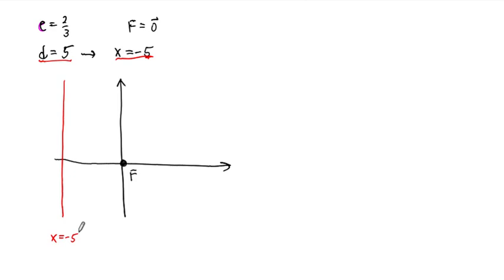And then our eccentricity is 2 thirds. 2 thirds is obviously less than 1. And whenever E is less than 1, then your conic section is an ellipse.